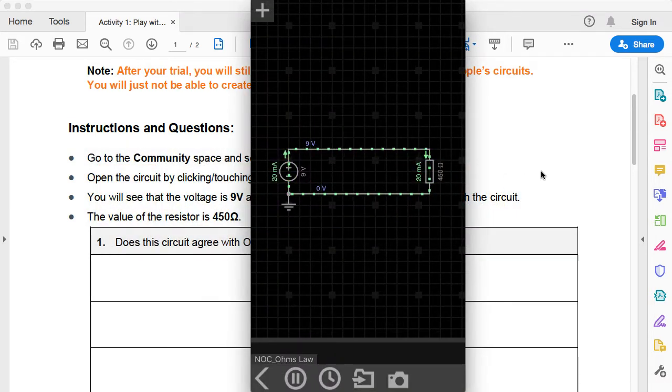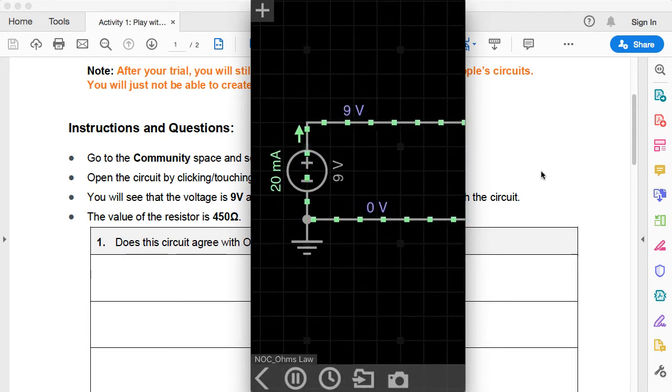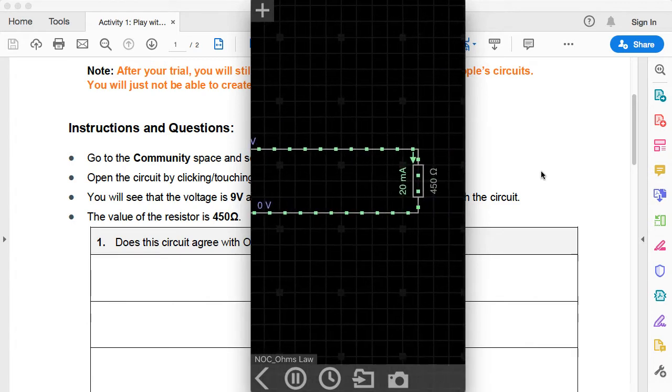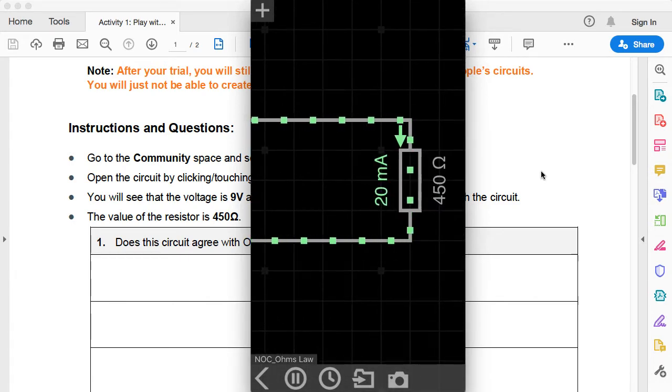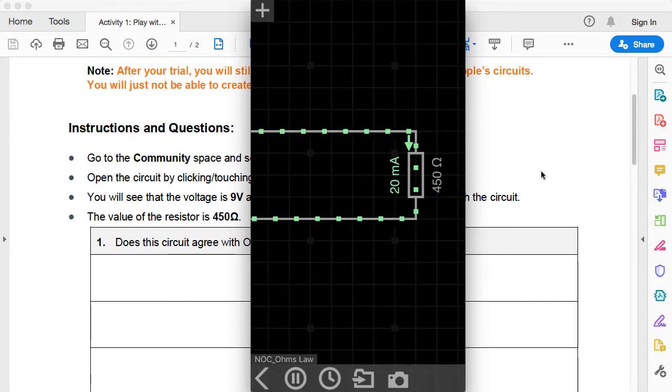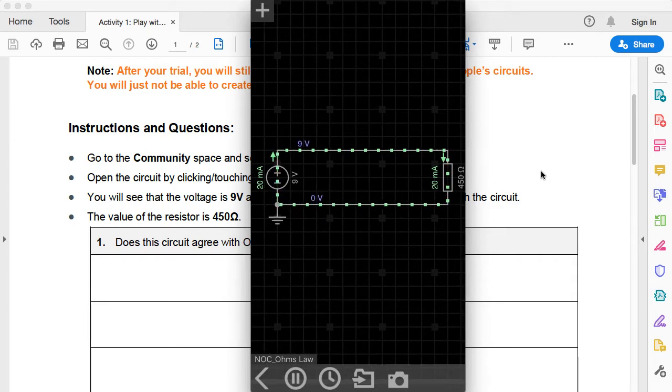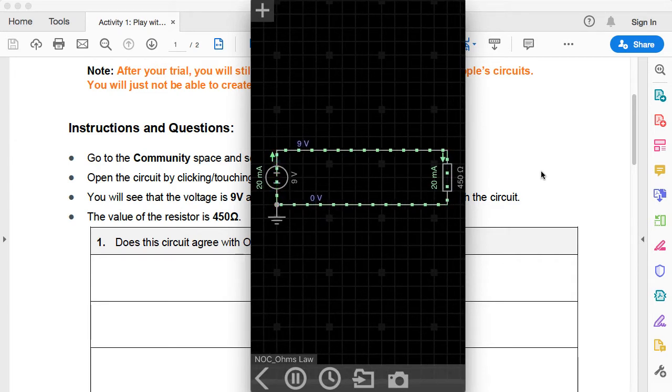If we just zoom in on the battery or the power supply we can see very clearly that it's stated there as 9 volts and in green we can see that the amperage, the current flowing through that battery as well as through the other device in the circuit, this resistor, is 20 milliamps. We can also see that it shows us the current flowing and this is obviously the direction of conventional current which is flowing from positive to negative.